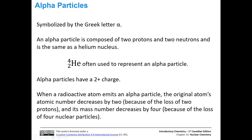When a radioactive atom emits an alpha particle, the original atom's atomic number decreases by two, because it's going to jettison two protons. And it's also going to decrease the mass number by four, because we're going to lose two protons and two neutrons.